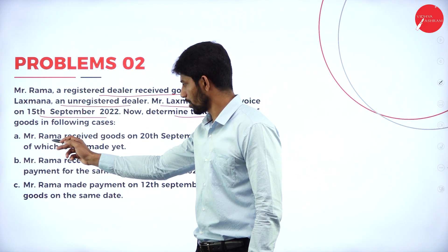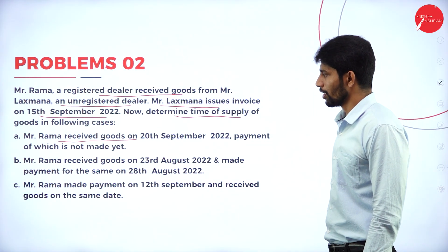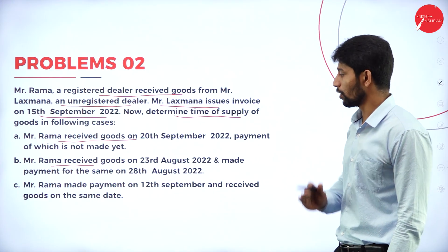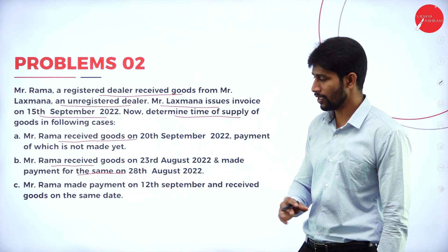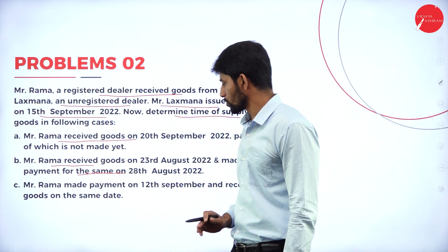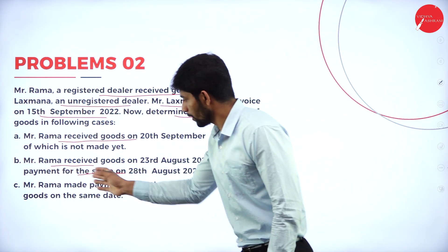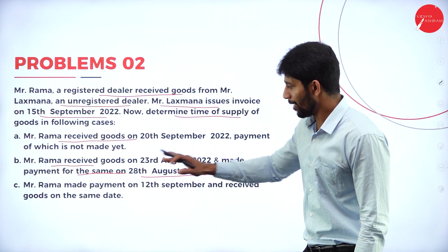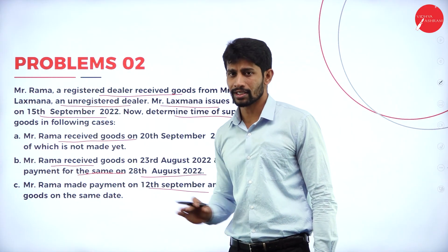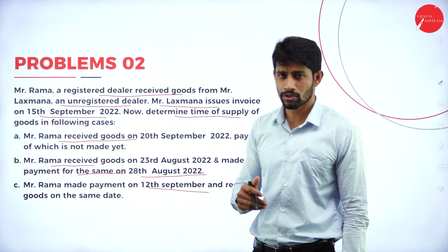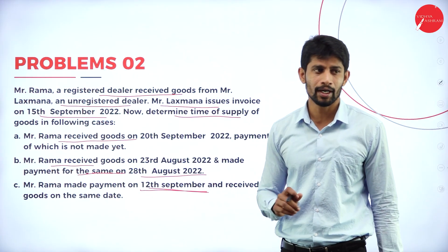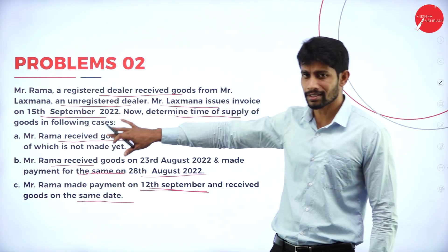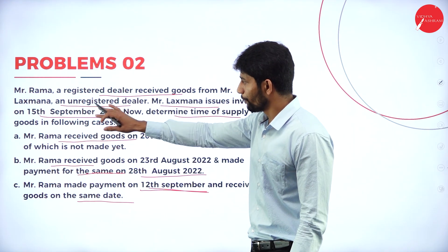In case 1, Mr. Rama received goods on 20th September 2022 and payment has not been made. In case B, Rama received goods on 23rd August 2022 and made payment on 28th August 2022. Case 3: Rama made payment on 12th September and received goods on the same date, 12th September 2022. Using this information, find the time of supply of goods with respect to reverse charge mechanism.